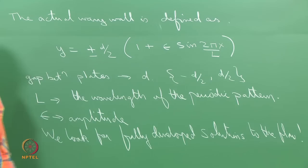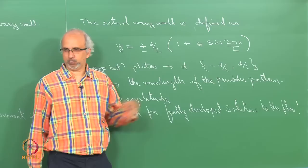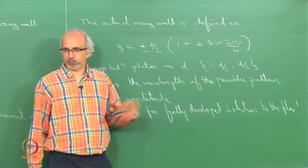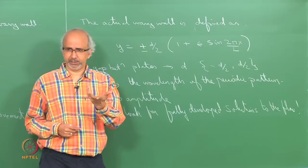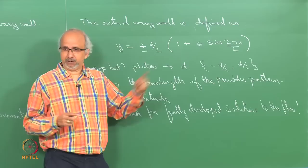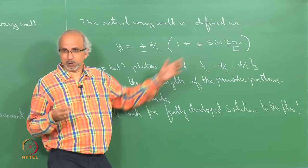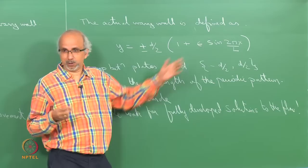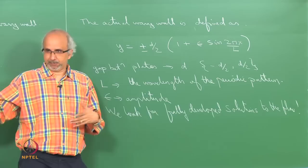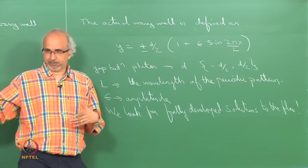As epsilon tends to 0, the wall is given by y equals ±d/2, the two flat walls, and we know how to solve that. So basically, when epsilon is 0 you just do separation of variables, put y equals d/2 and find the constants. The problem arises when trying to find arbitrary constants because you cannot put y equal to the wavy surface — you want a constant but you get a function of x. So that is where the problem is going to arise.